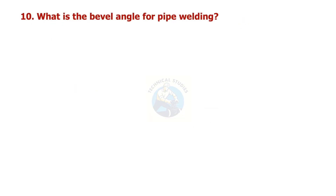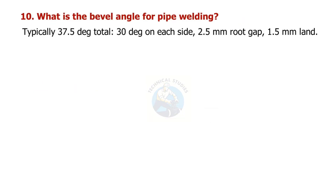What is the bevel angle for pipe welding? Typically 37.5 degrees total — 30 degrees on each side, with a 2.5 mm root gap and 1.5 mm land.